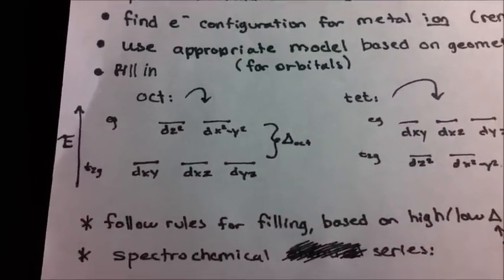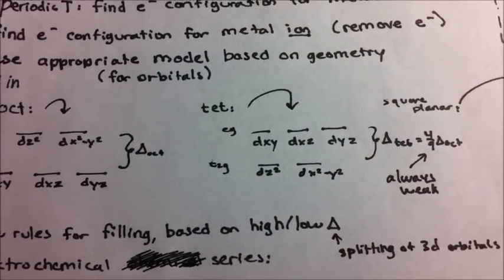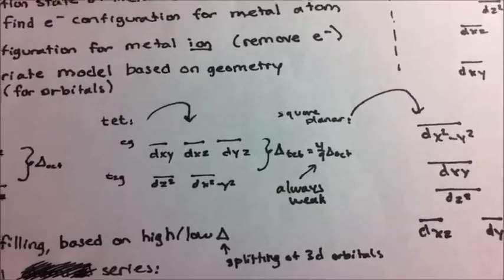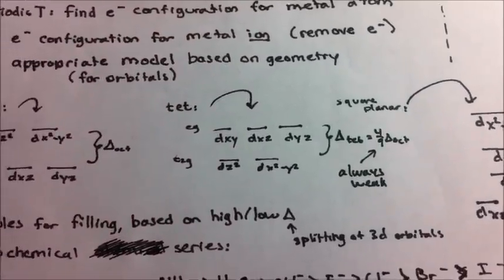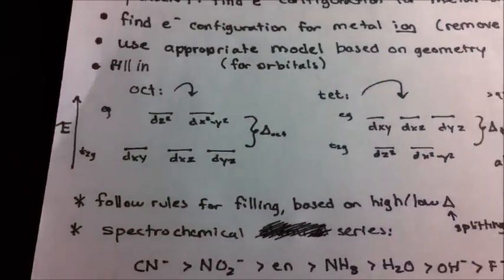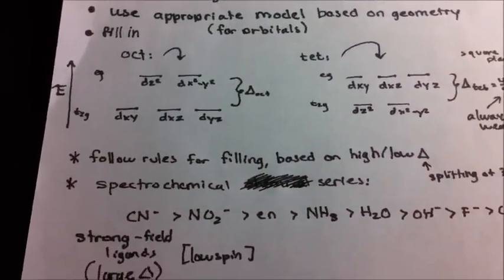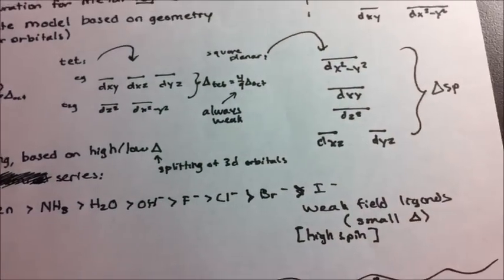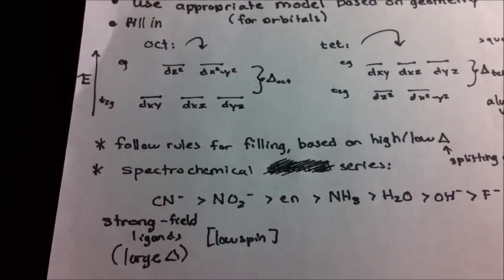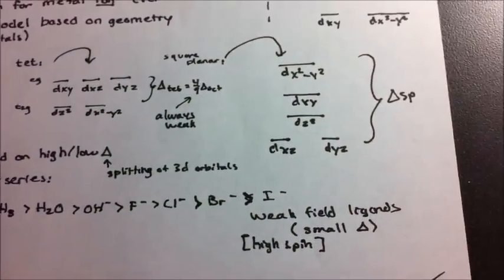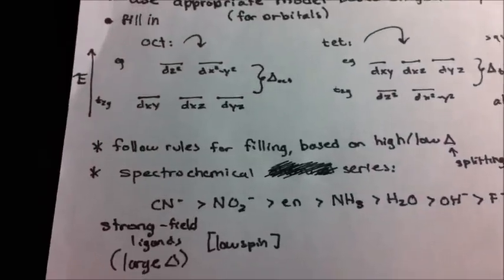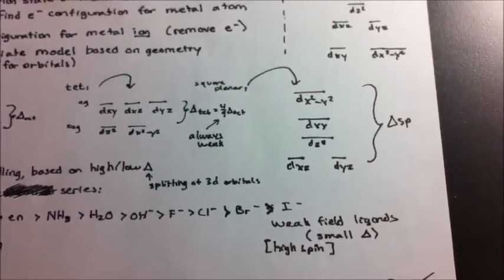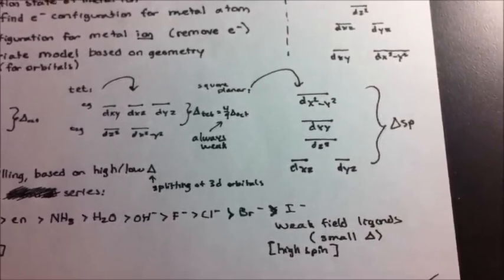In these models, you have to follow the rules for filling, and it's based on a high and low delta value. This delta value refers to the splitting of your 3d orbitals. If you aren't given the delta value, you can use the spectrochemical series, which lists various ligands based on their strength. Strong field ligands will have a large delta value and be low spin, while weak field ligands will have a small delta value and a high spin.